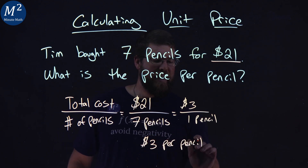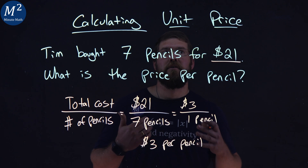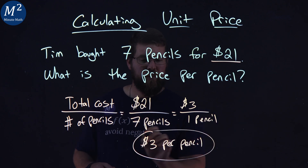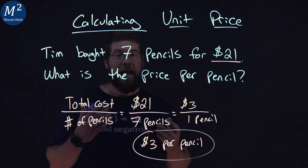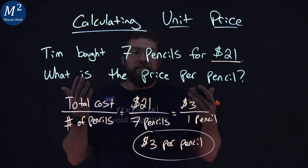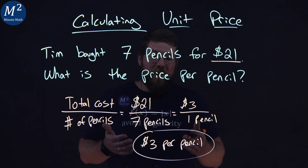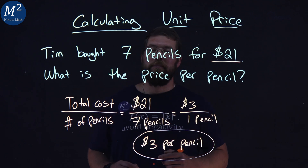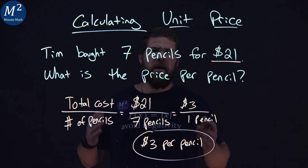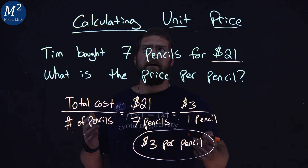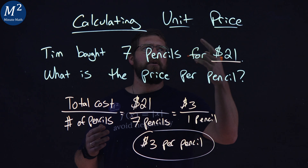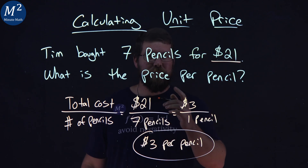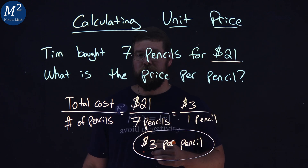Because that is a unit cost — unit price. And so, our answer here would be: Tim paid three dollars per pencil. I hope you learned something here about calculating unit price. And as always, thanks for watching.